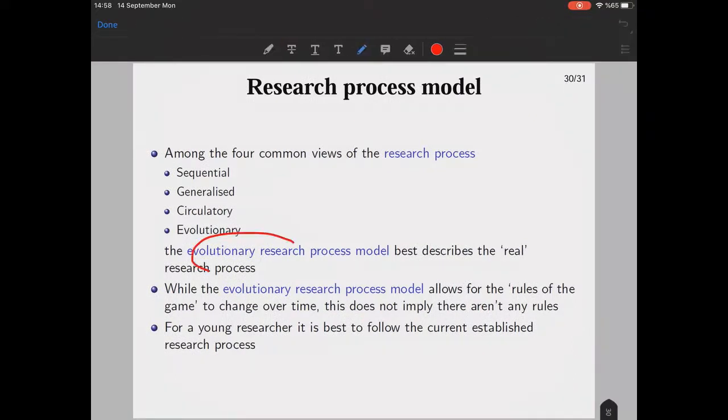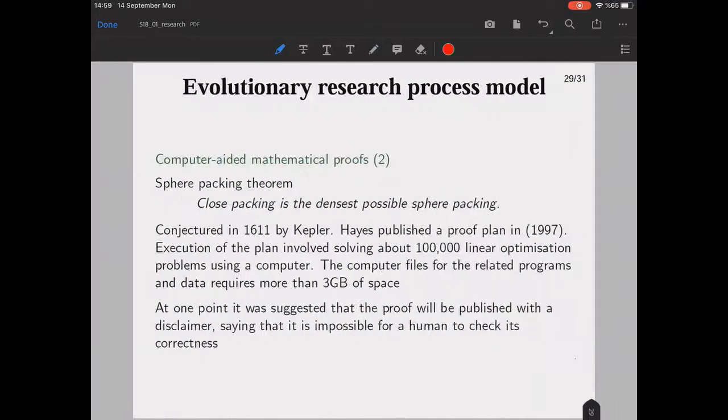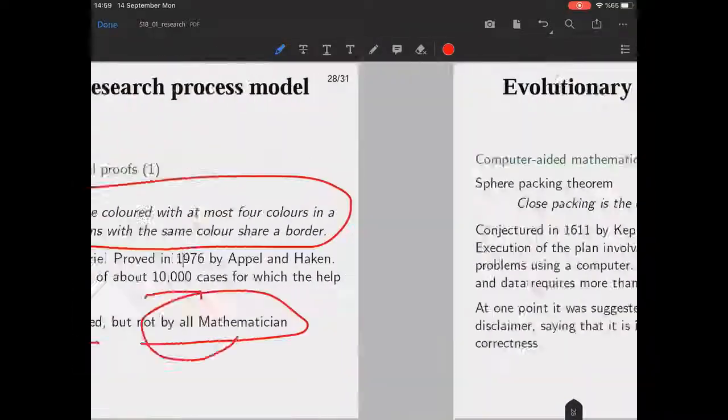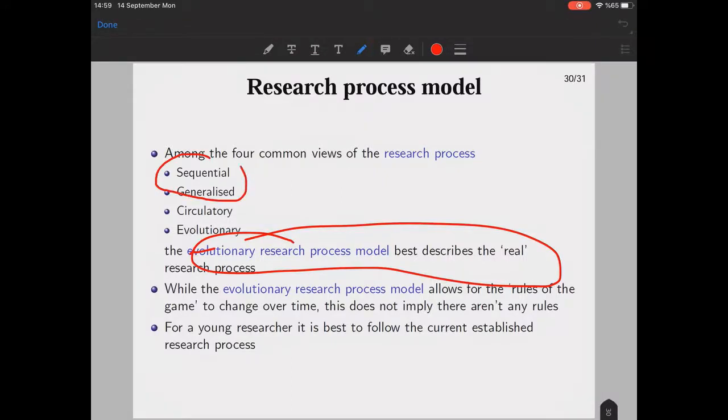Among these four common views of research process, the evolutionary research process model can fit into real research process more likely. While the evolutionary research process model says the rules of the game change over time, this doesn't imply that there aren't any rules. We can stick to what we have in current trends. As for a young researcher, if you're just at the start of your career as a scientist or researcher, it is best to follow the current established research process models. Maybe you can be more familiar with, for example, sequential or generalized models—especially generalized one makes more sense to me when I look back to my PhD and master's of science studies. They can be more meaningful.